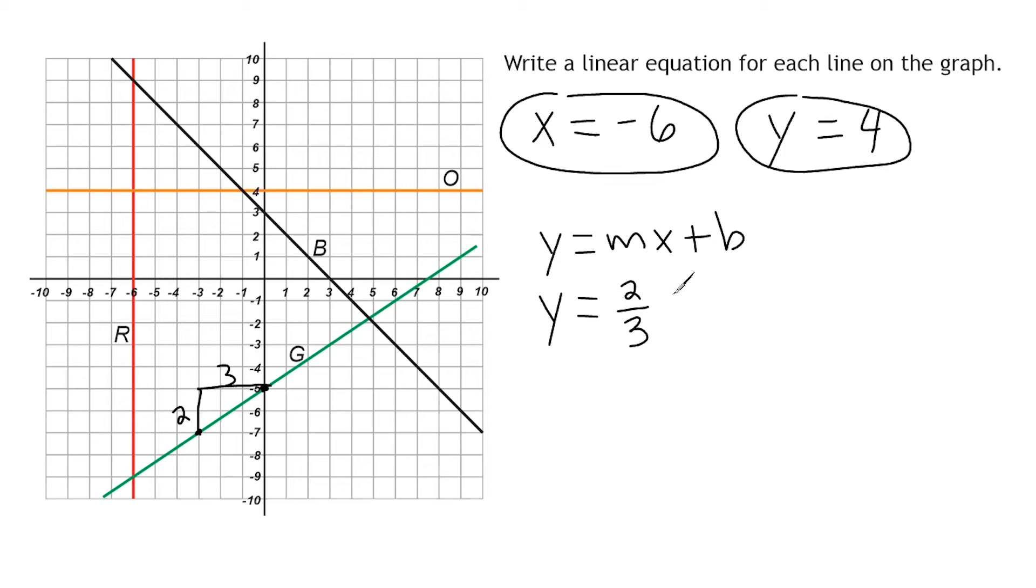So we write y equals two thirds x and then we just figure out where our line crosses the y-axis because b represents the y-intercept and it crosses the y-axis at negative five. So after this x, we write minus five and that's all there is to it.